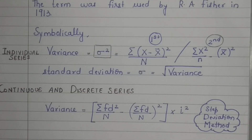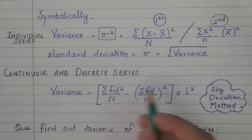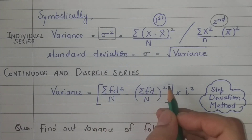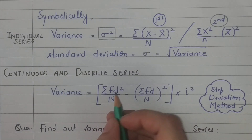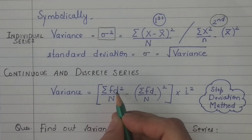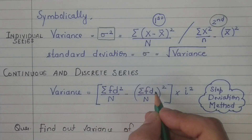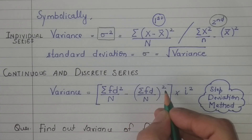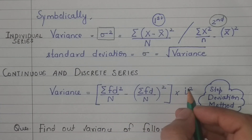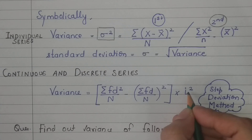For continuous and discrete series, the variance formula — when we take standard deviation we have a square root, but since variance is the square, the square root is removed. The formula becomes: sigma of f times d squared, divided by n, minus sigma of f times d upon n, whole squared, multiplied by i squared — because squaring eliminates the outer square root.